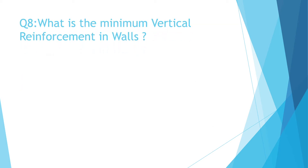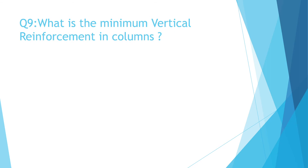Question 8: What is the minimum vertical reinforcement in walls? A. 0.01%, B. 0.02%, C. 0.03%, D. 0.04%. The correct answer is D: 0.04%.